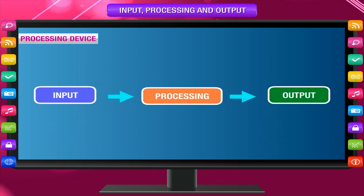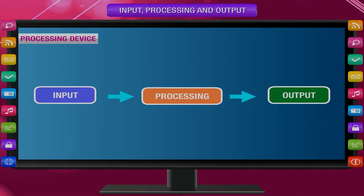Input → Processing → Output. This is called the IPO cycle. The computer works on the IPO cycle.